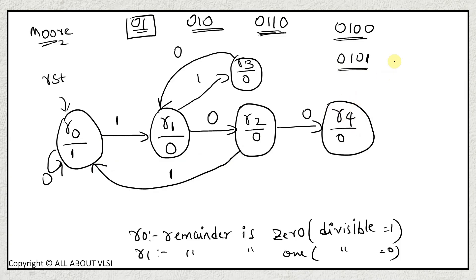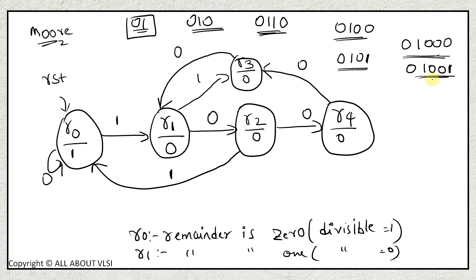From R3, on 0 the sequence becomes 6, remainder 1, so go to R1. From R2, on 0 the sequence becomes 4, remainder 4, go to R4 with output 0. On 1 from R2, the sequence becomes 5 which is divisible by 5, so go to R0 with output 1. In R4, on 0 the sequence becomes 8, remainder 3, go to R3. On 1 from R4 the sequence becomes 9, remainder 4, stay in R4. This is how you design an FSM to detect divisibility by 5.